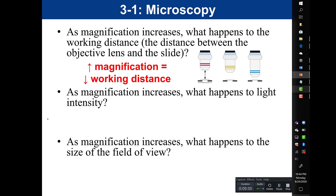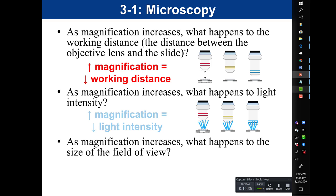As magnification increases, what happens to light intensity? Light comes from the bottom, and when it hits the glass of the slide it diffracts and scatters. If the lens is small, more of that light gets funneled up into the lens. But if the lens is very large and very close to the slide, most of the light does not get into the lens — a lot is lost to diffraction. So as magnification increases, light intensity decreases.